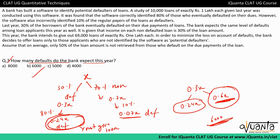So even after using the software, 6,000 defaults will occur. I hope the process is clear — if you still have a doubt, please comment.